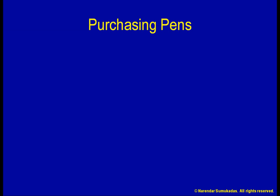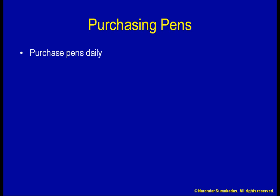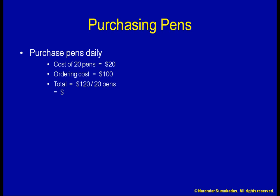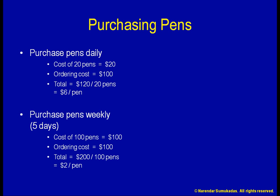Let's think about a typical purchasing process in a large corporation. The cost of the paperwork to complete a purchase order can easily run upwards of $100. Say I need 20 pens per day for my department, and each pen costs $1. If I buy the pens on a daily basis, $20 for the pens plus $100 for the paperwork comes to $120 for 20 pens, or $6 per pen. Instead, if I buy the pens on a weekly basis, $100 for the pens plus $100 for the paperwork comes to $200 for 100 pens, or $2 per pen.